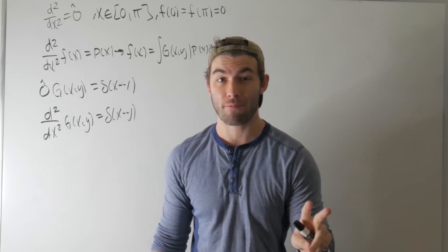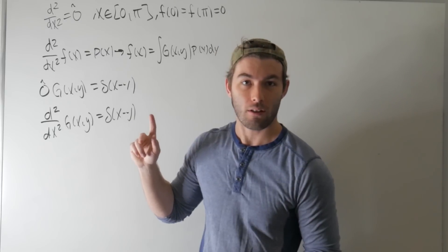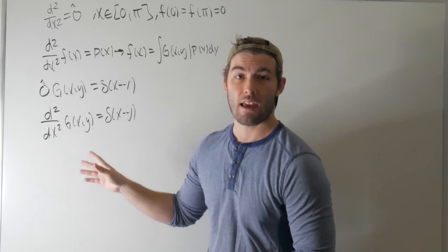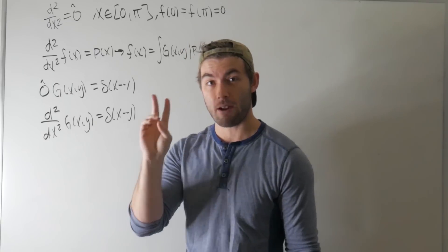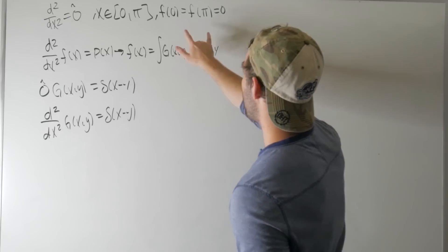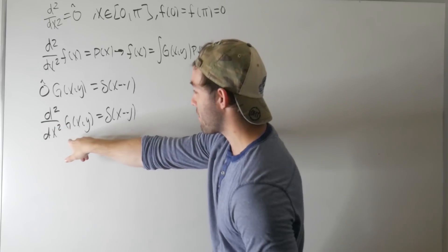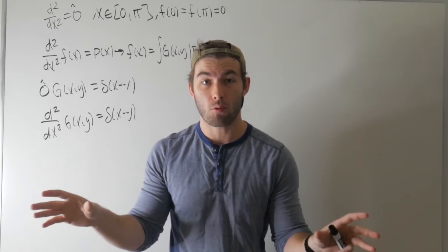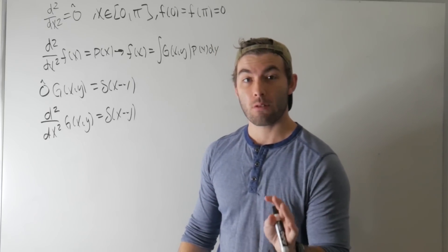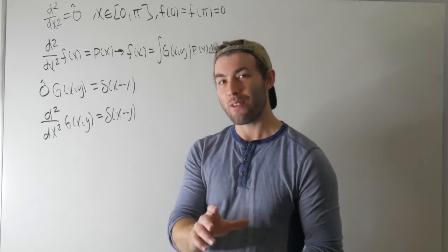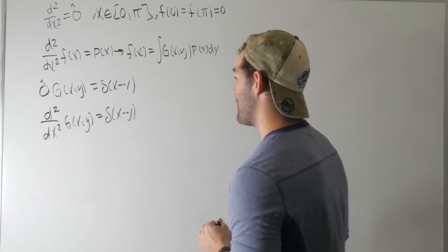We're going to have to solve two differential equations — one for each side of x = y, because for x ≠ y the delta function goes to zero. Since it's second order, each equation has two constants of integration, giving us four constants total. We only have two boundary conditions, so we need two more: one imposing continuity of G(x,y) at x = y, and another saying the difference in derivatives of the right and left solutions equals one.